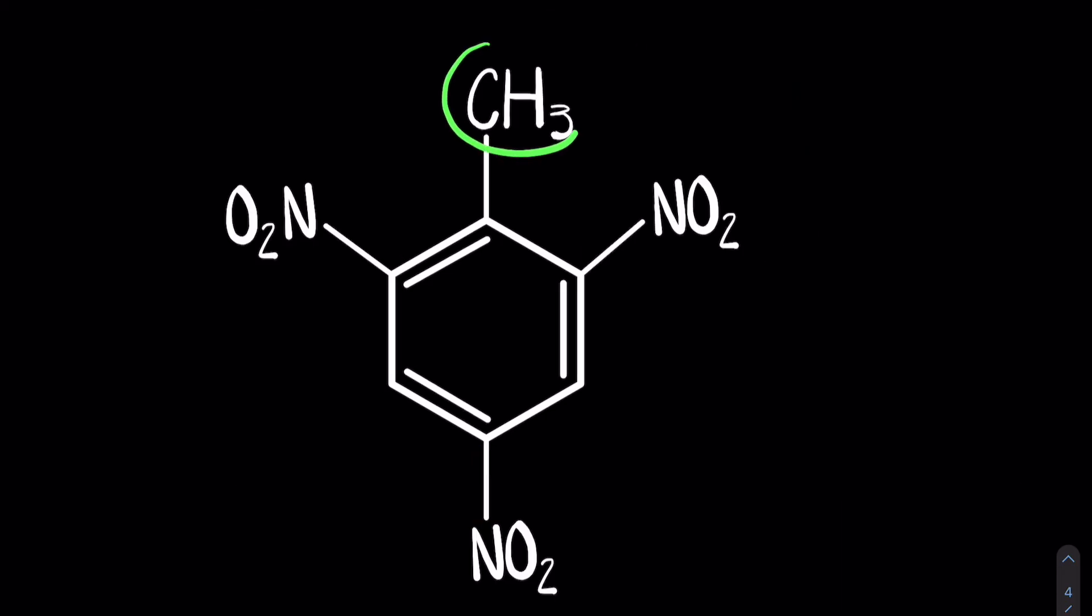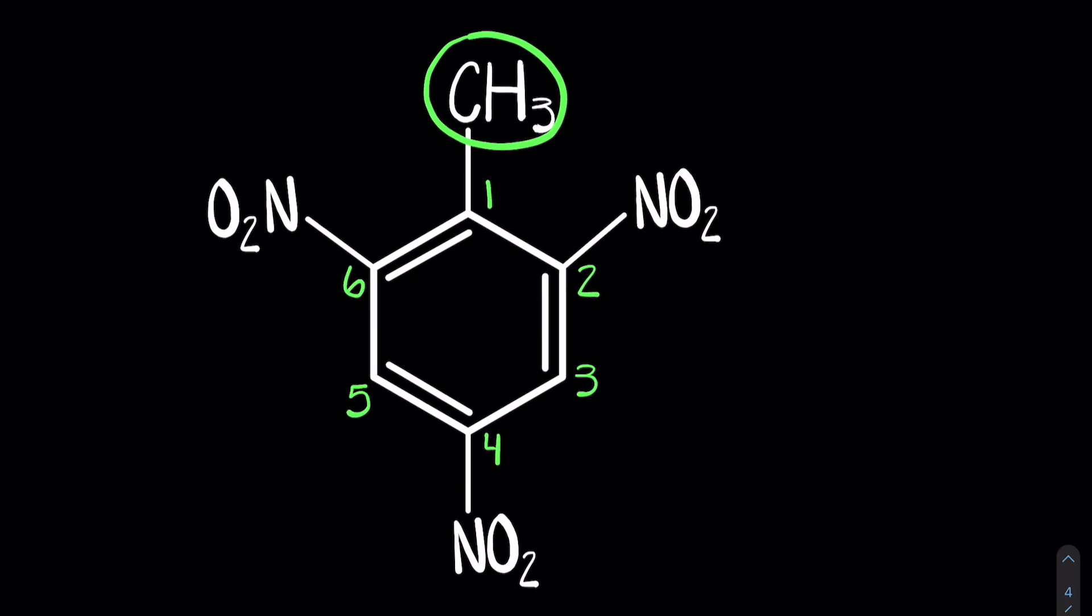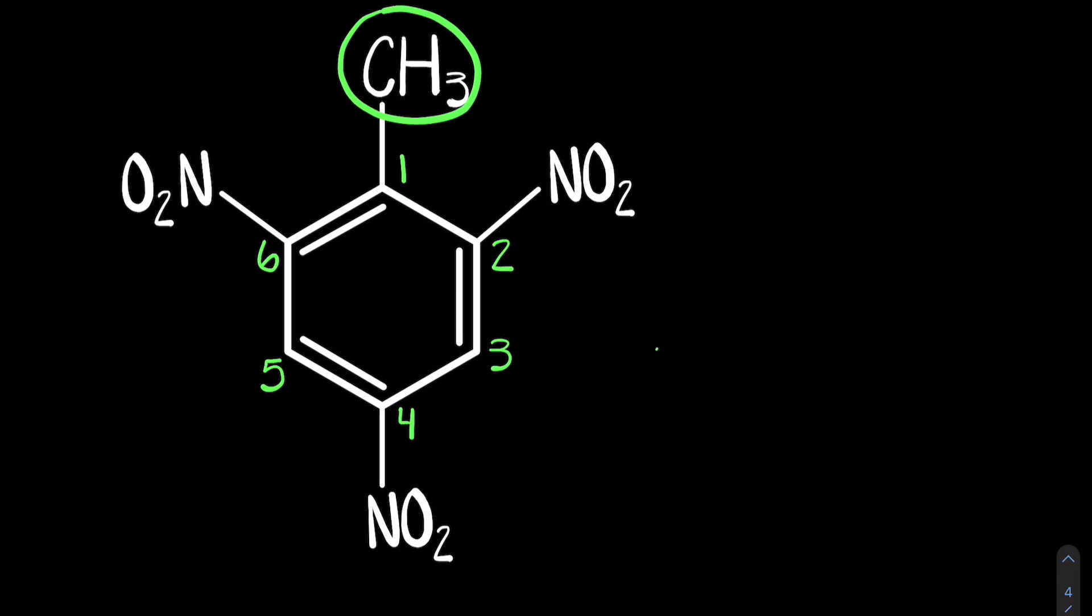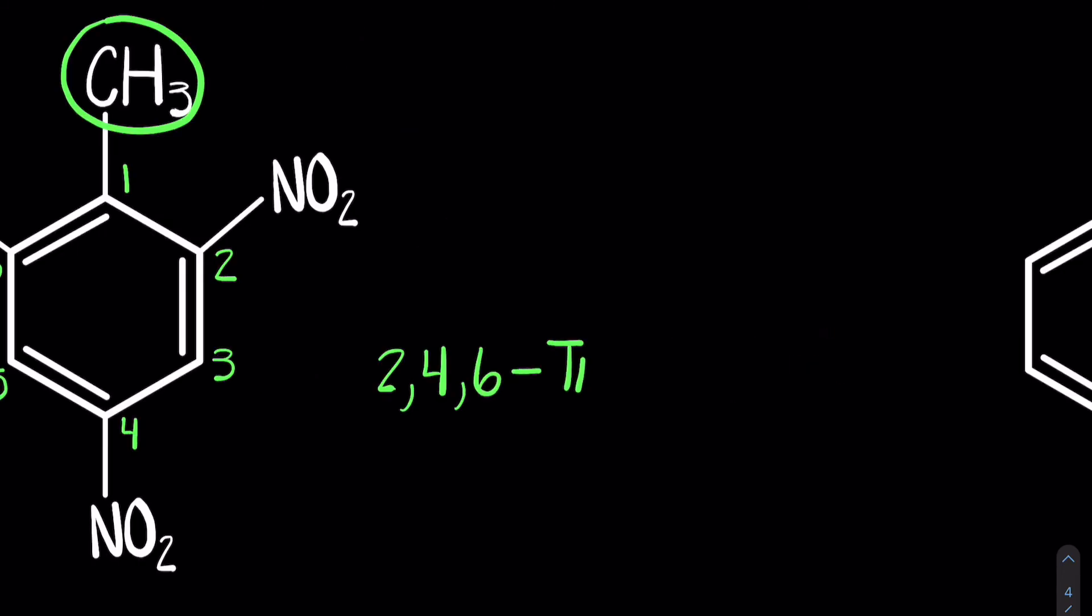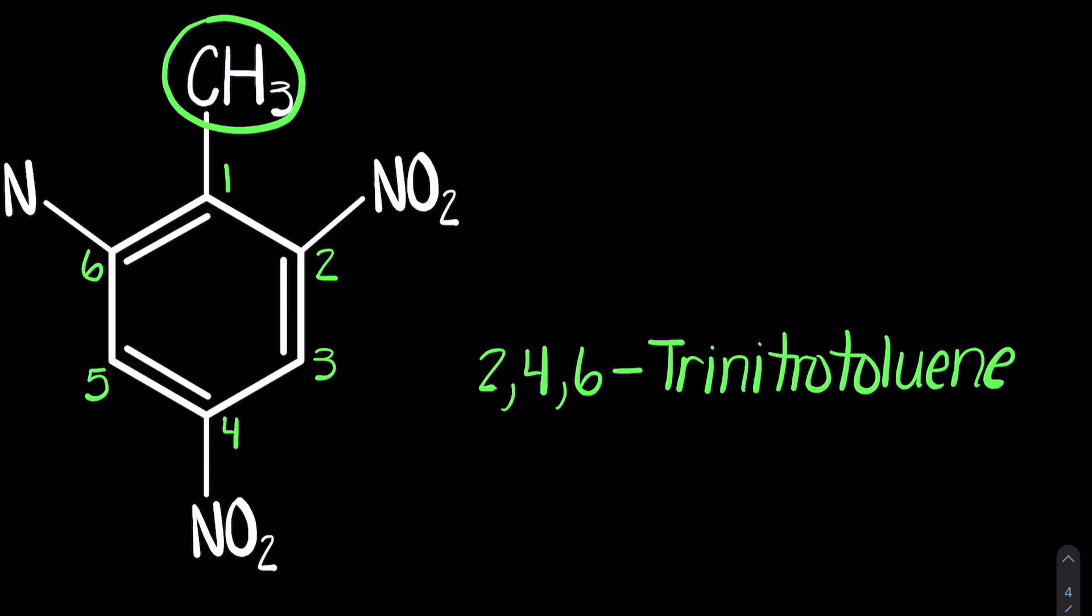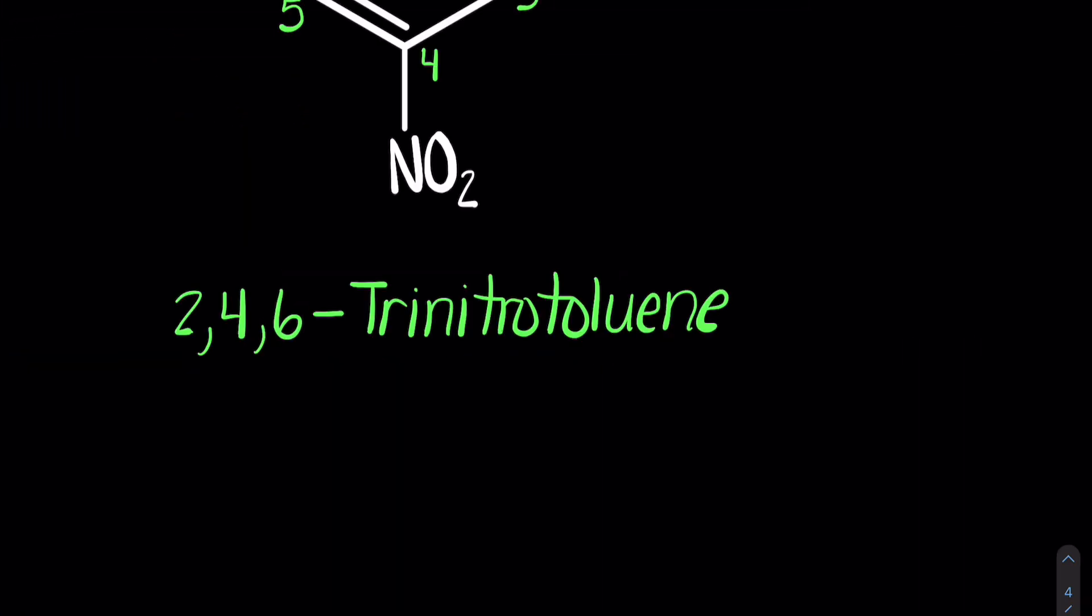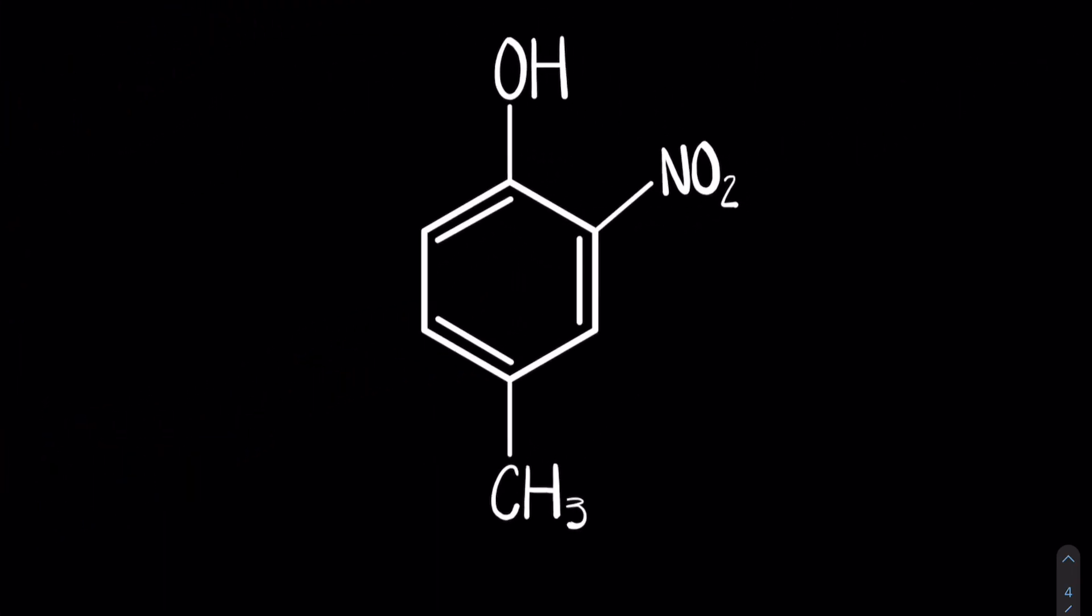So let's name this molecule. We notice the methyl, so therefore this is a toluene. Trinitro. If you can pick out this molecule before I name it, I'm very impressed. An interesting fact about this molecule: 2, 4, 6-trinitrotoluene, also known as TNT. So a quick fact, pop culture—ACDC in their TNT song states TNT dynamite. They are not the same thing. Dynamite is nitroglycerin. TNT is 2, 4, 6-trinitrotoluene.